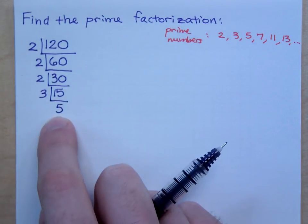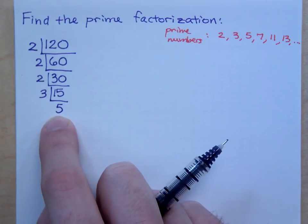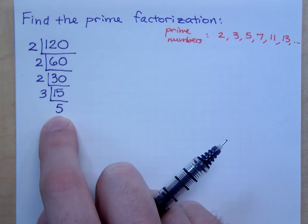Now, once you get to the very end here where you have a prime number, you don't need to go any further. I don't need you to see how many times does 5 go into 15. No, 5's prime. You're done.